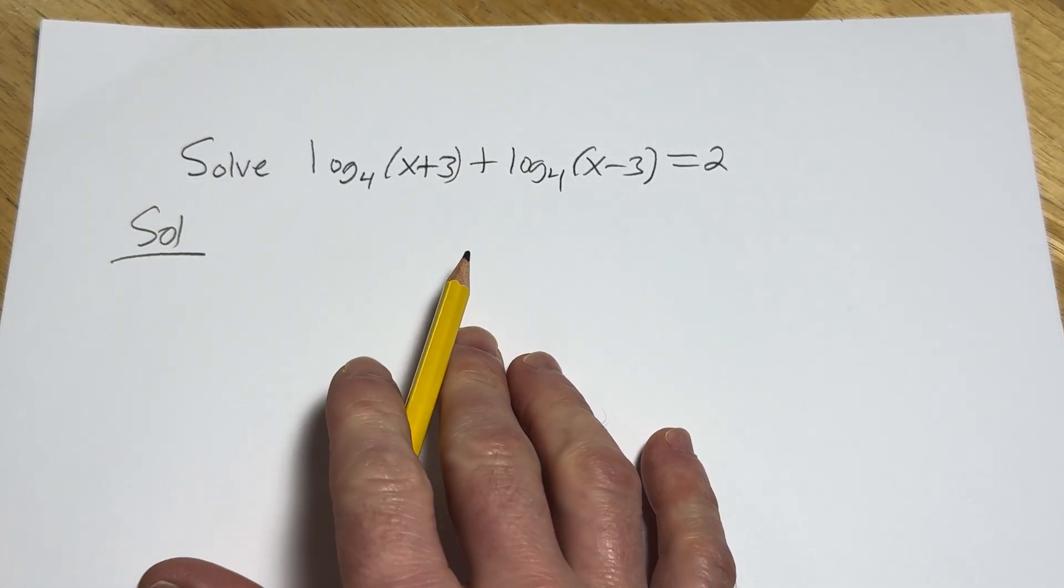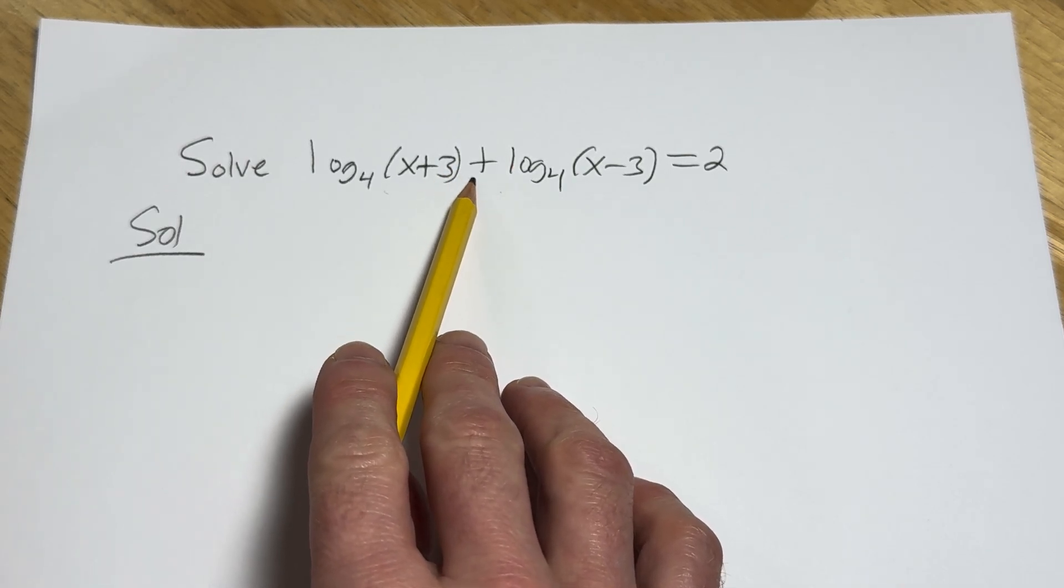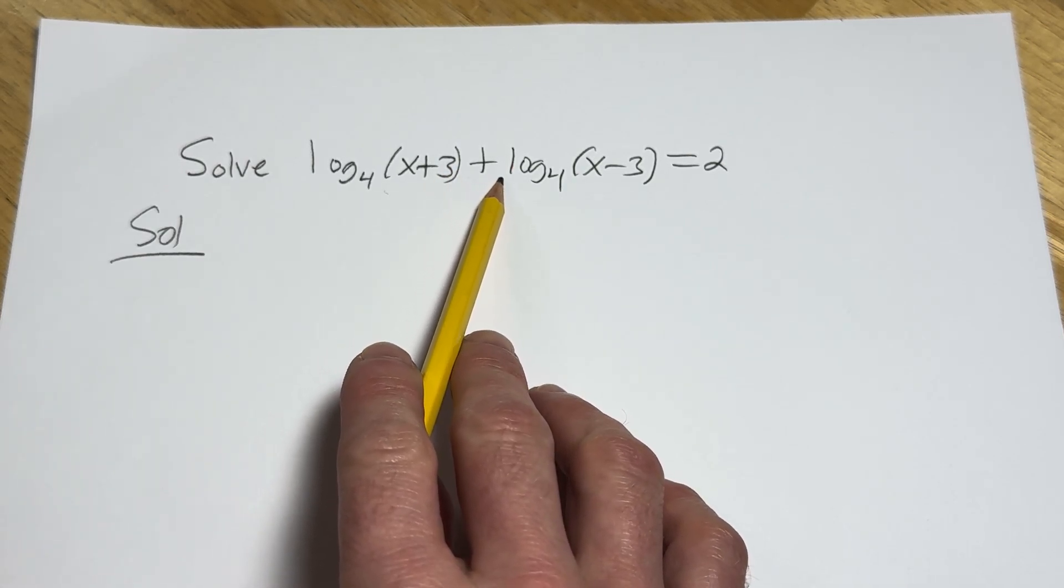So when you have an equation like this and you have two logs and you have a plus sign in between the logarithms, you want to use something called the product rule for logarithms.